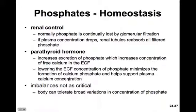Phosphate homeostasis is primarily under renal control and the control of parathyroid hormone. Normally, phosphate is continually lost through glomerular filtration. However, if plasma concentration drops very low, the renal tubules reabsorb all filtered phosphate to retain it. Parathyroid hormone increases excretion of phosphate, raising the concentration of free calcium in extracellular fluid, since lowering extracellular phosphate minimizes formation of calcium phosphate, leaving plenty of calcium free in the blood plasma.